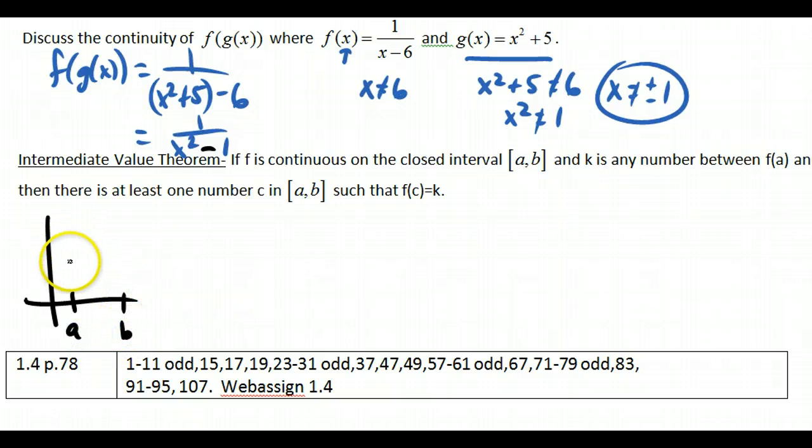Let me draw a picture. This is the easiest way to do it. That means that if I have a value here, and I have a value here, and somehow I have a continuous function. This is f of a, and this is f of b.